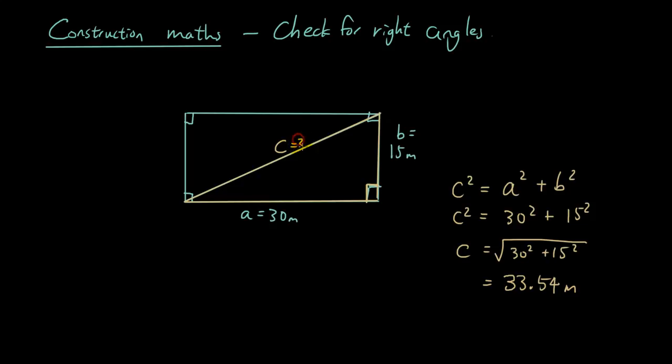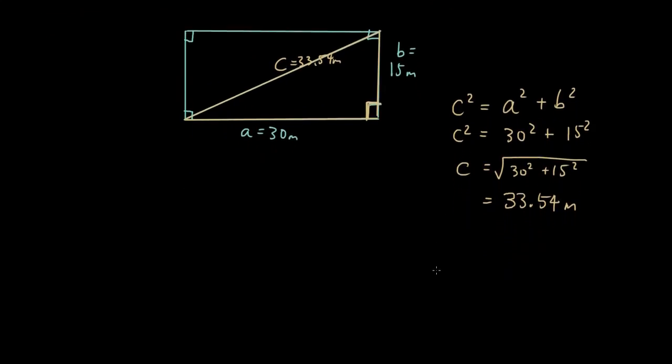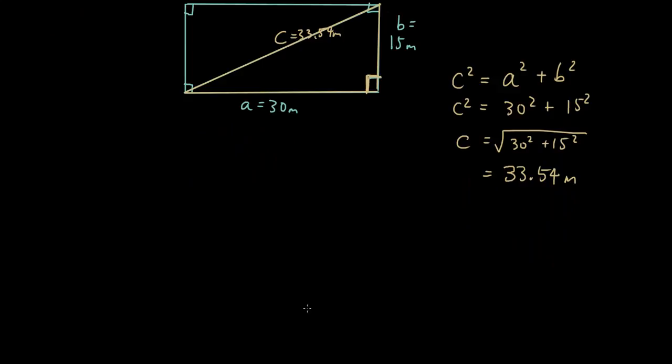The answer is 33.54 meters. So if this side is 33.54 meters then chances are this angle would be a right angle. However, if the side here is not 33.54 it's too late. So what you want to do really is you want to check for squareness as you're pegging out the perimeter of the house.